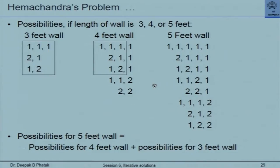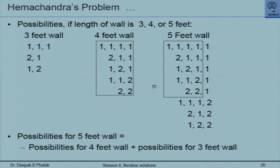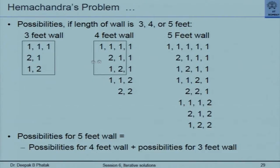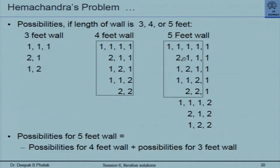I suddenly notice that the possibilities for a five-feet wall equal the possibilities for four-feet wall plus the possibilities for three-feet wall. So the total number of arrangements equals the sum of arrangements for the previous two lengths. Hemchandra was not solving a brick problem — that formulation is from Professor Ranade's book. The point is that this recurs here and then there is something additional, and then this whole thing recurs and there is something more. For a four-feet wall you take all arrangements and add one foot; because four plus one is five feet, you also take all three-feet wall arrangements and add a two-foot brick.